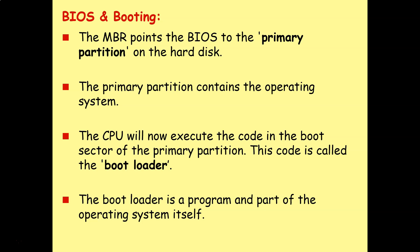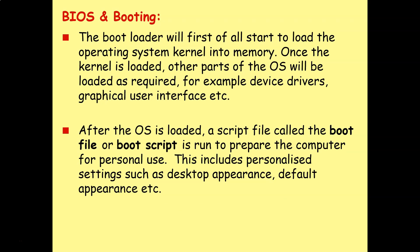The CPU will now execute the code in the boot sector of the primary partition — this code is called the bootloader. The bootloader is a program and is part of the operating system itself. It will first start to load the operating system kernel into memory, and once the kernel is loaded, other parts of the operating system will be loaded as required, such as device drivers and graphical user interfaces. The operating system kernel is like the supervisor — the managing program that always has to be resident in memory to control the rest of the system.